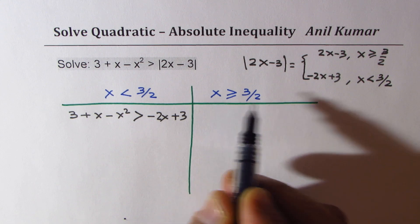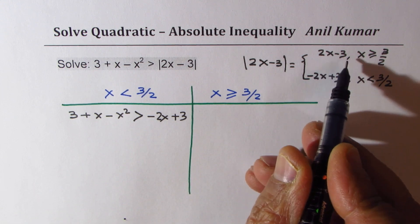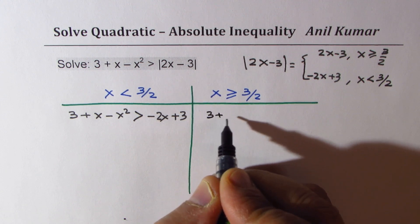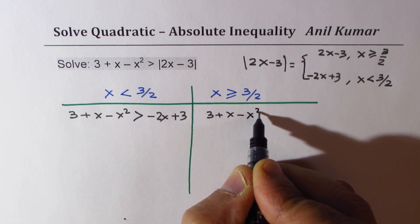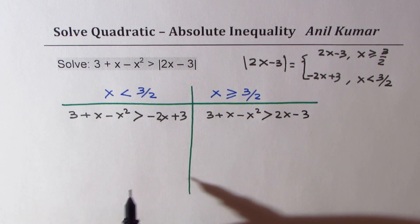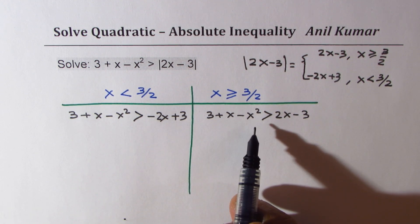Now when you are considering on the right side, we have to write 2x minus 3 for the absolute value, right? So we get 3 plus x minus x squared greater than 2x minus 3.